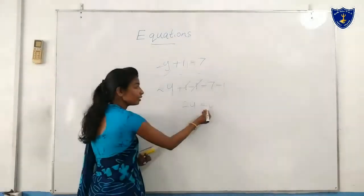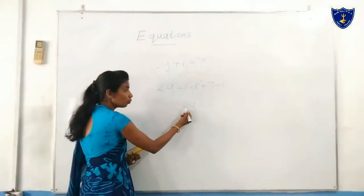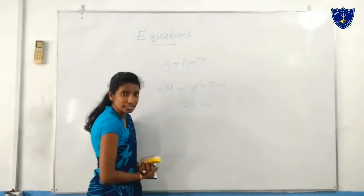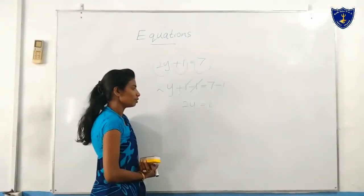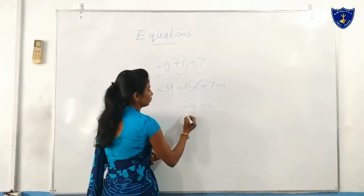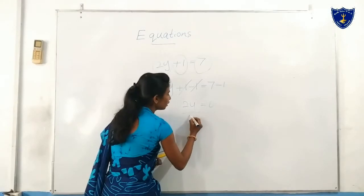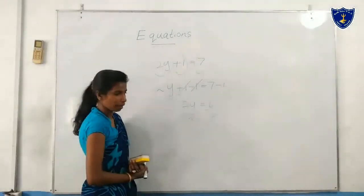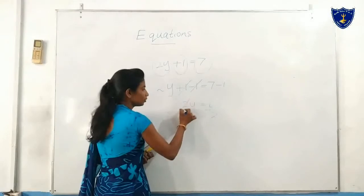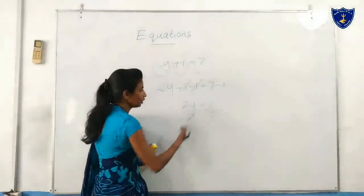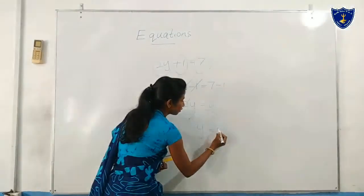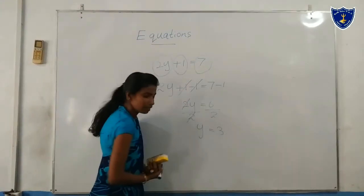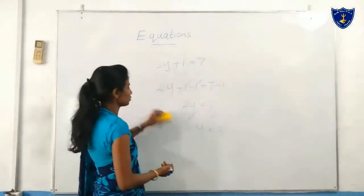2y equals 6, meaning 2 times y equals 6. Next, we want to divide by 2. When we do that, the 2 cancels out and y equals 3. y equals 3 is our answer.